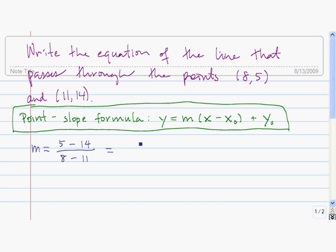So it's equal to 5 minus 14, which is negative 9, divided by 8 minus 11, which is negative 3, and that simplifies to 3.